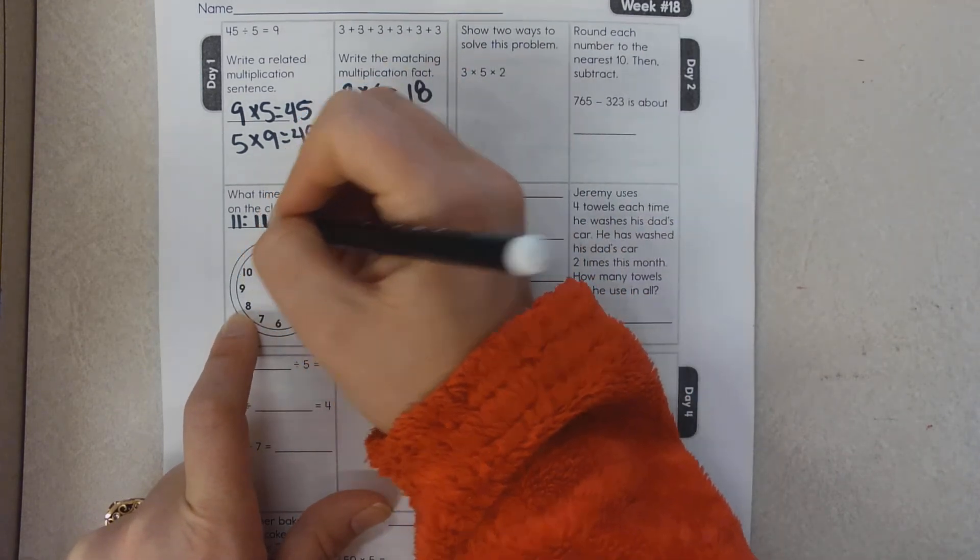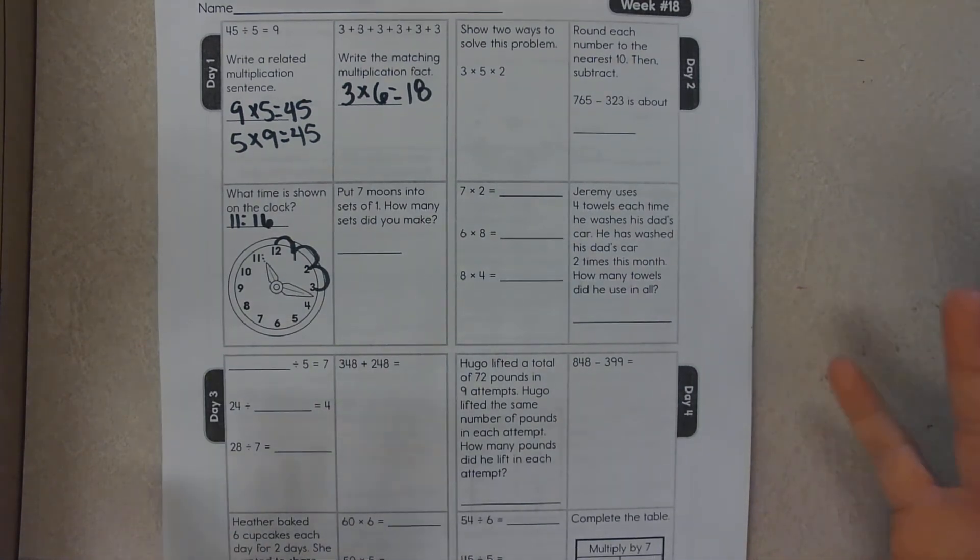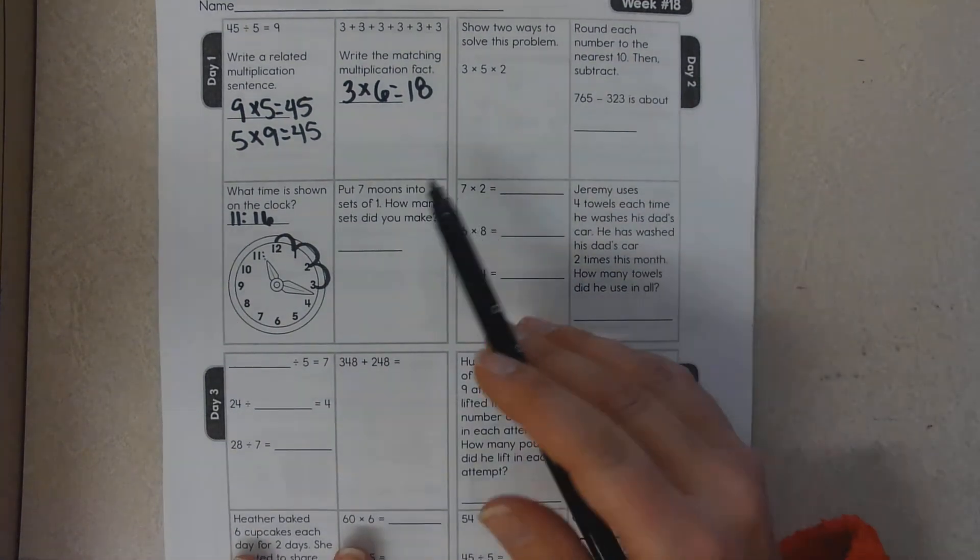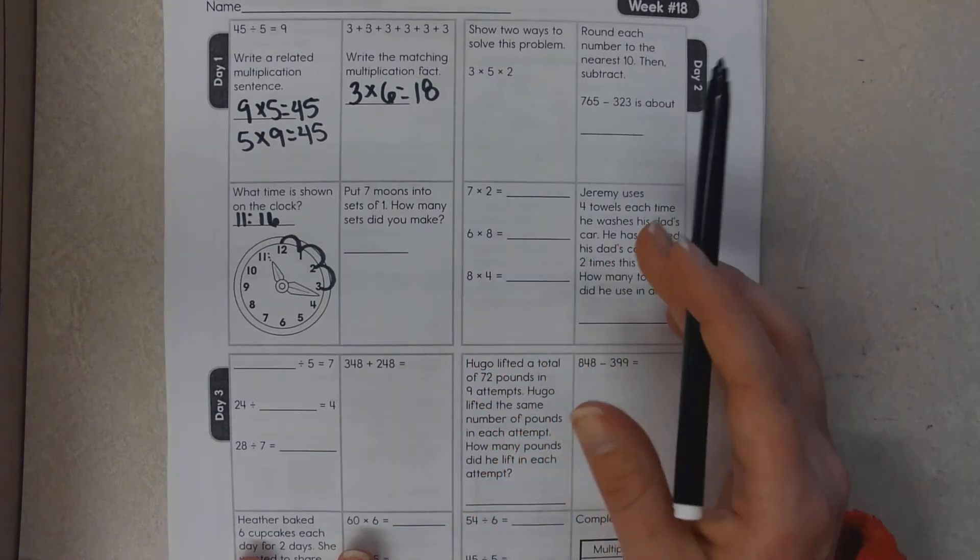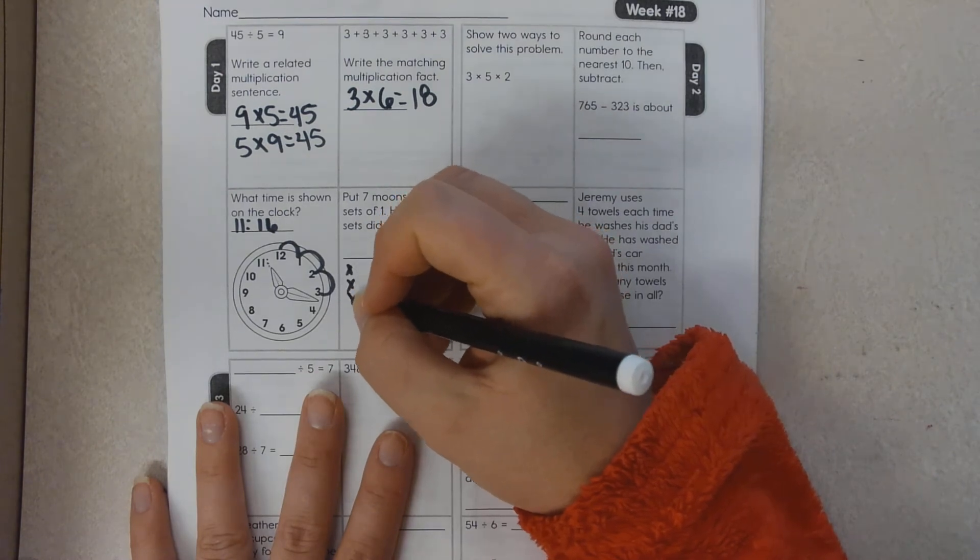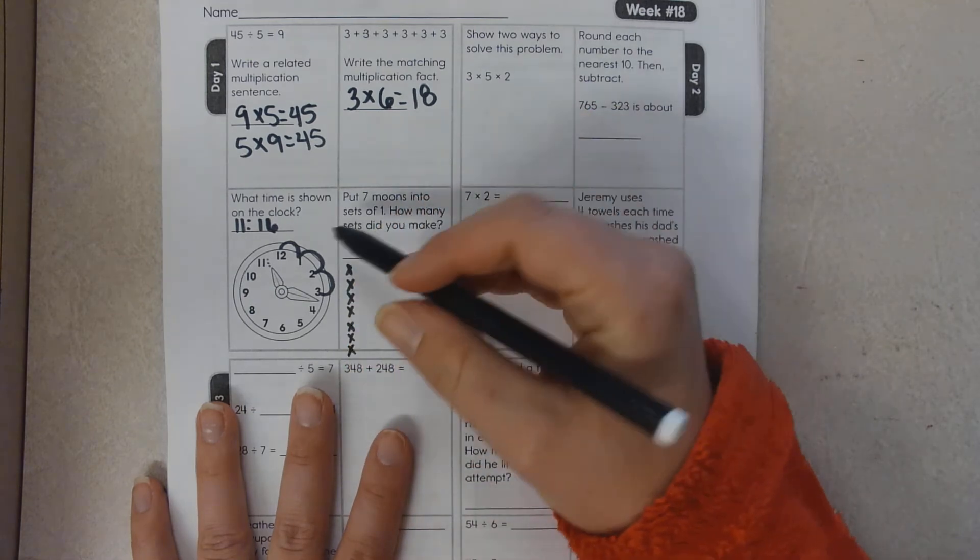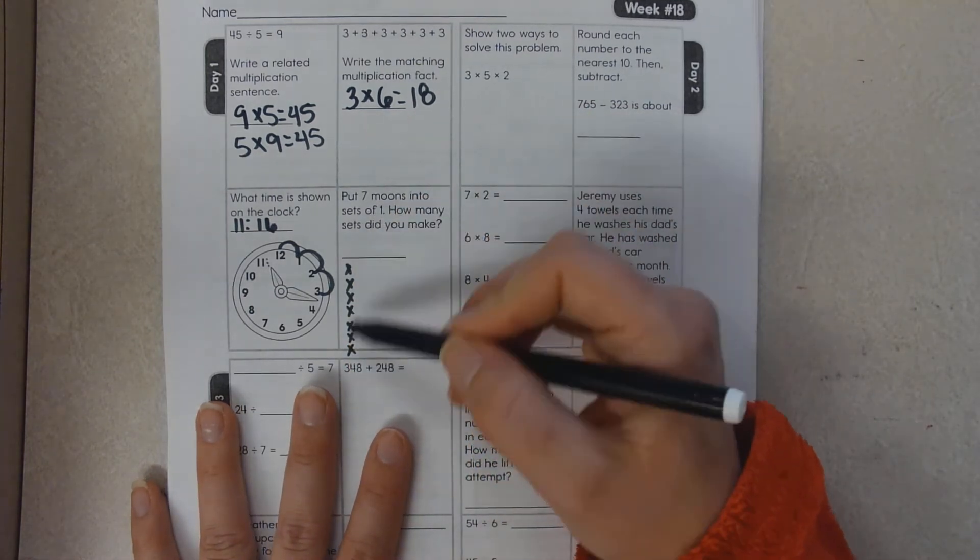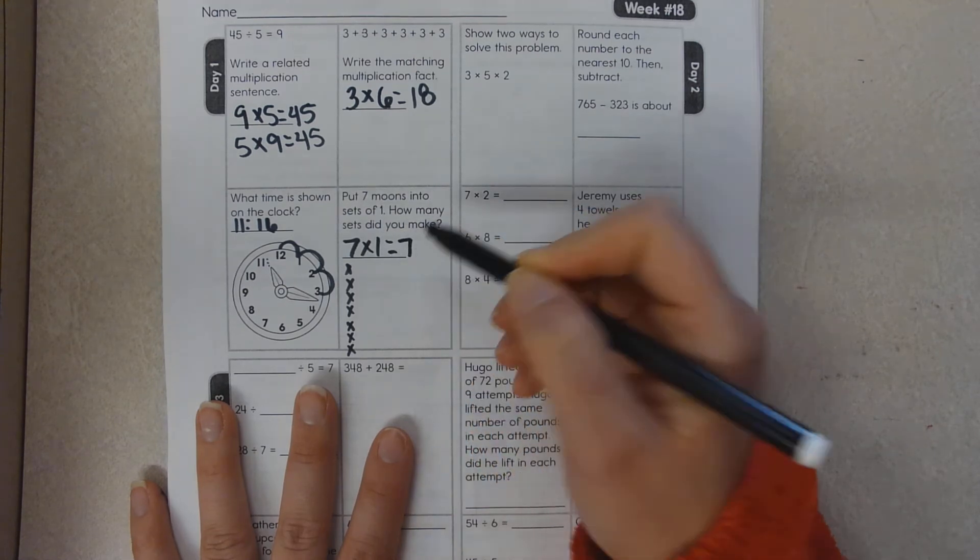Put seven moons into sets of one. So one, two, three, four, five, six, seven. I have seven moons in one set. Seven times one equals seven.